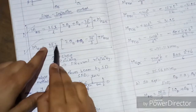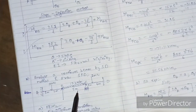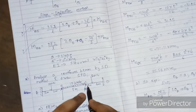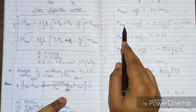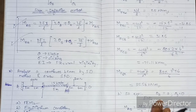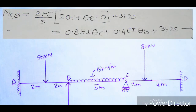For M_BC: L = 5. M_BC = (2EI/5)(2θ_B + θ_C) + MF_BC, with MF_BC = −31.25. For M_CB: L = 5. M_CB = (2EI/5)(2θ_C + θ_B) + MF_CB, with MF_CB = +31.25. On solving, M_CB = 0.8EIθ_C + 0.4EIθ_B + 31.25.